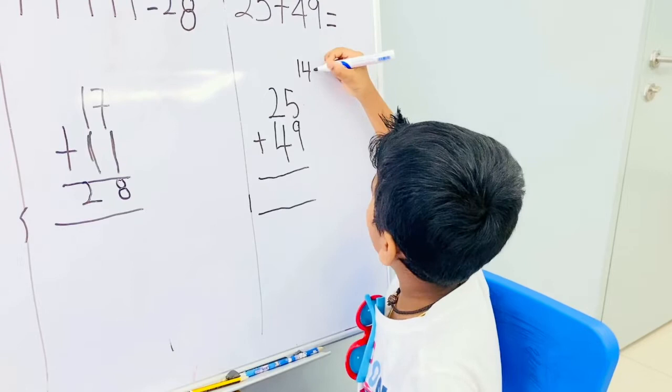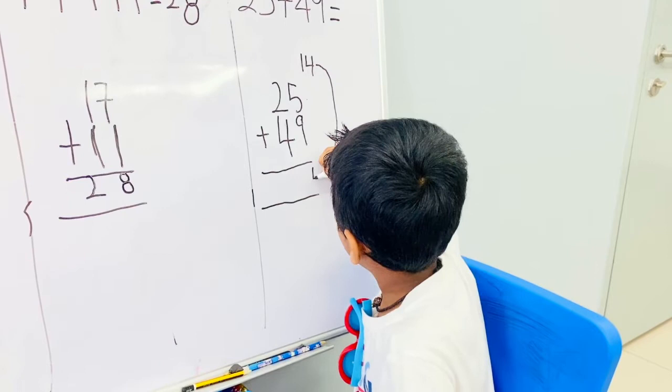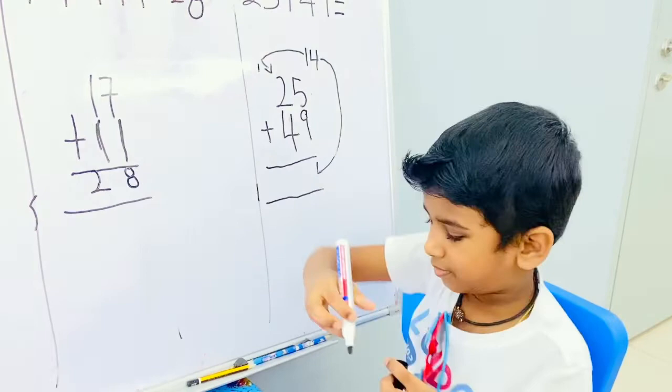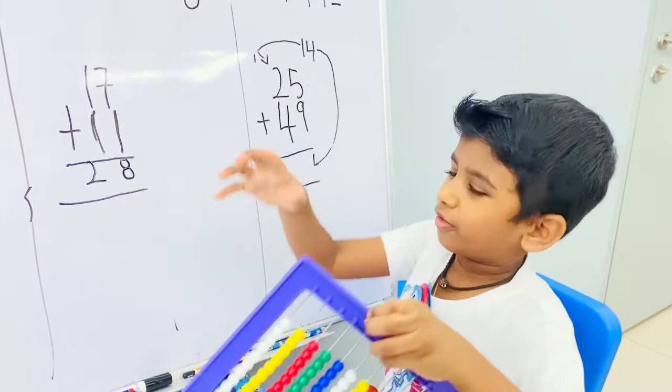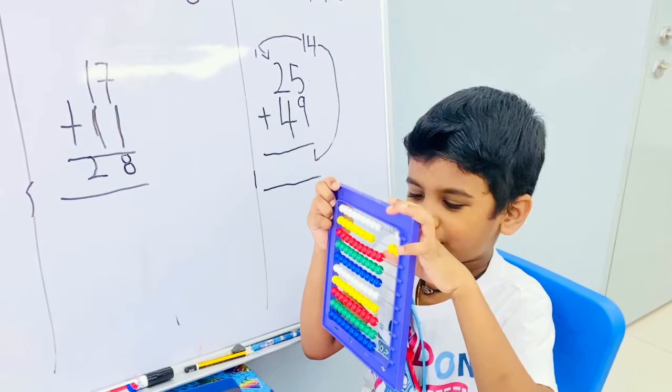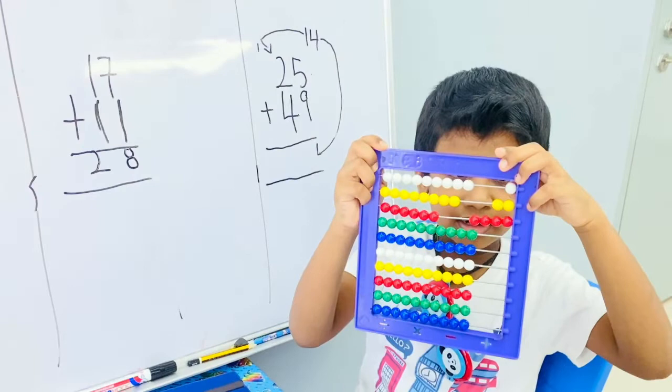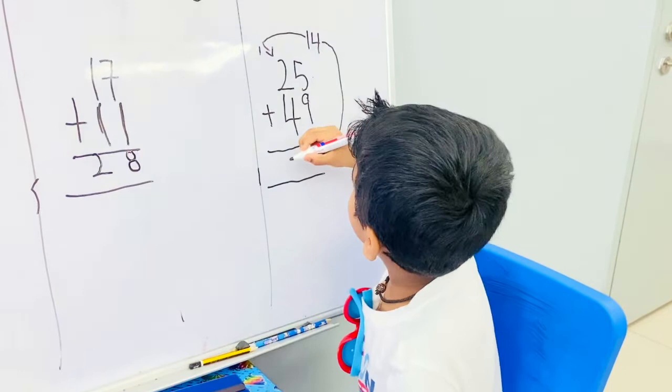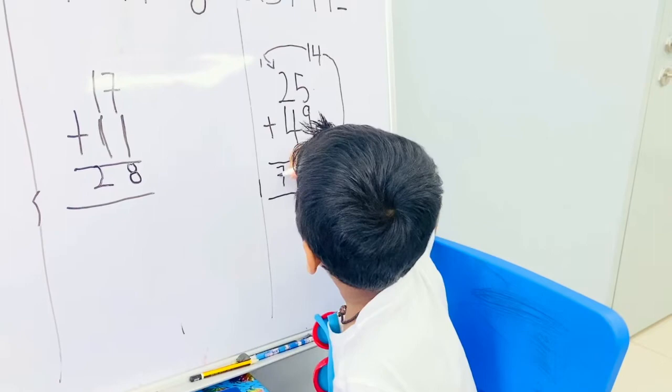This 1 has to carry over. So 1 plus 2 plus 4: 1, 2, 3, 4, 5, 6, 7. So I have to write here 4, then here 7. So the answer is 74.